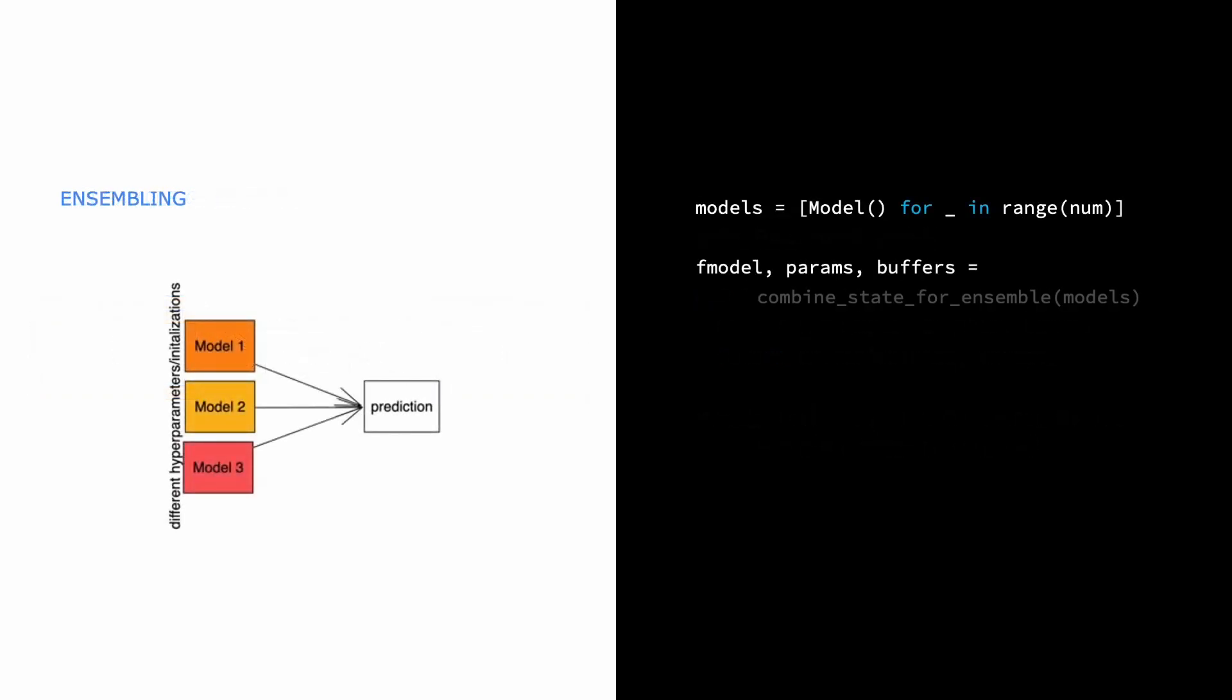Similarly, there's no way to do model ensembling in stock PyTorch. In model ensembling, a user has multiple replicas of the same model with different hyperparameters or initializations. They'll use the output of all of these models to come up with a final prediction.